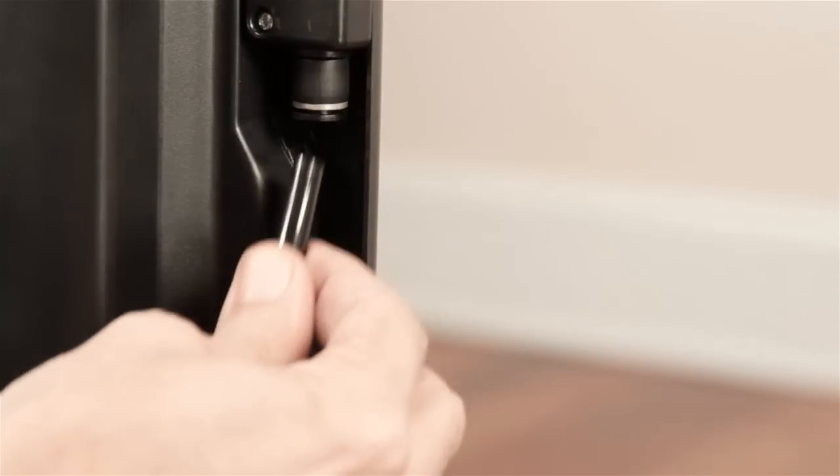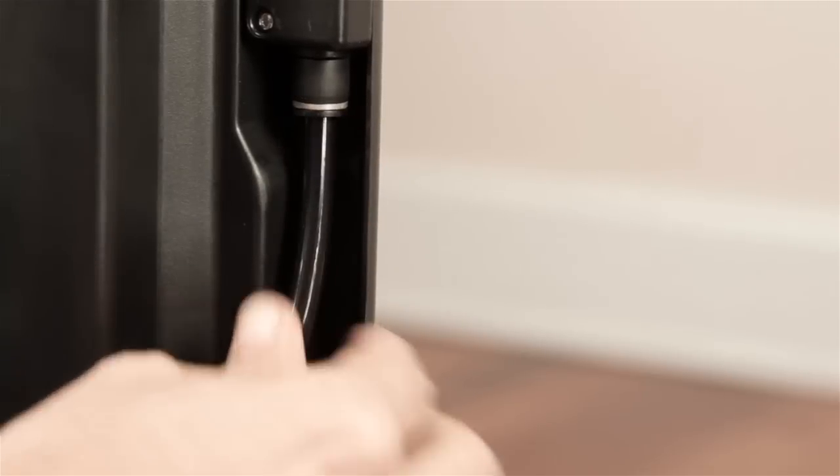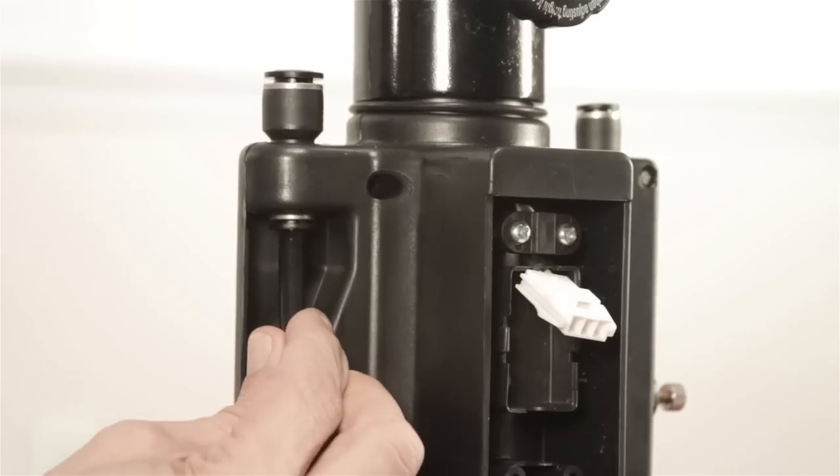Step 7. Connect the air tube and water tube to the connectors on the Brisa fan pole assembly by pushing the tubes all the way into the corresponding connectors.